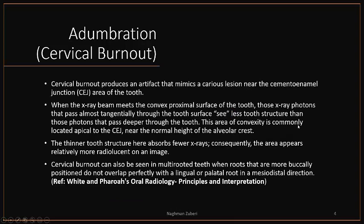This area of convexity is commonly located apical to the cementoenamel junction near the normal height of the alveolar crest. Normal height means where the normal height should be — even if there is periodontitis and the bone has been lost, in the area where the normal height was present before that periodontitis, you will see cervical burnout. The thinner tooth structure here absorbs fewer x-rays; consequently, the area appears relatively more radiolucent on an image. Cervical burnout can also be seen in multi-rooted teeth when roots are more buccally positioned and do not overlap perfectly with the lingual or palatal root in a mesiodistal direction.